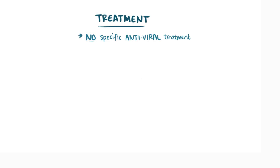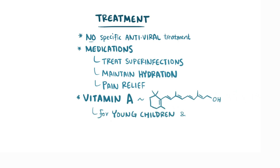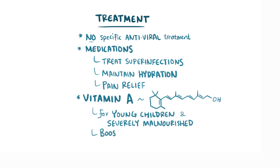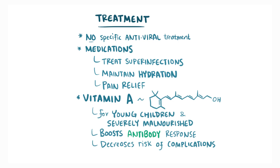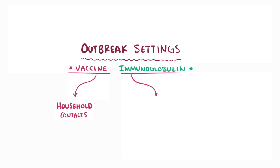When measles does develop, there isn't a specific antiviral treatment. The medications are generally aimed at treating superinfections, maintaining good hydration with adequate fluids, and pain relief. Some groups are also given vitamin A, like young children and the severely malnourished, which acts as an immunomodulator that boosts the antibody responses to measles and decreases the risk of serious complications. In outbreak settings, measles vaccine can be given to household contacts and measles immunoglobulin can be given to pregnant women and young infants to help prevent others from getting sick.